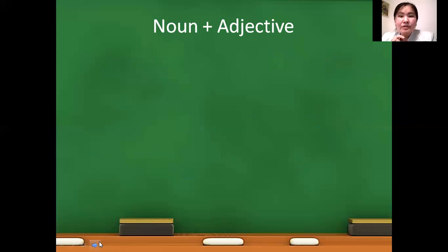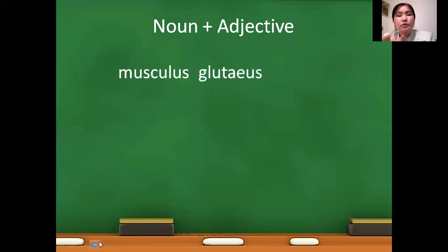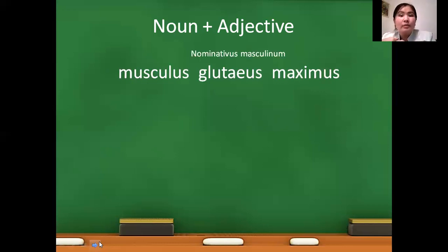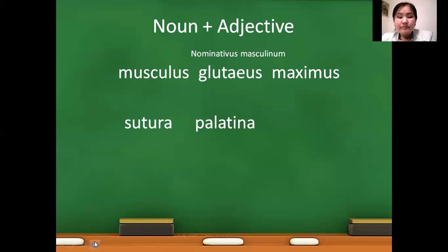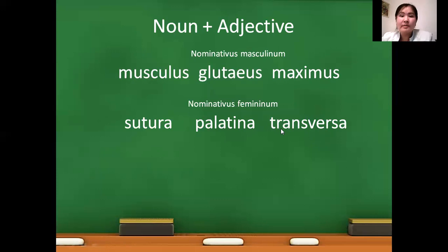Sometimes noun and adjective type terms can contain more words — they can contain two adjectives. For example, musculus gluteus maximus: both adjectives and the noun are used in nominativus masculinum. Another example: sutura palatina transversa — the -a endings on palatina and transversa indicate that all these adjectives are used in nominativus femininum.